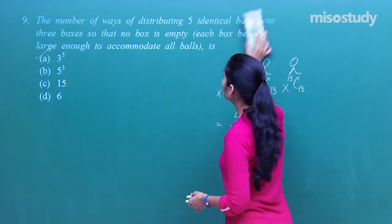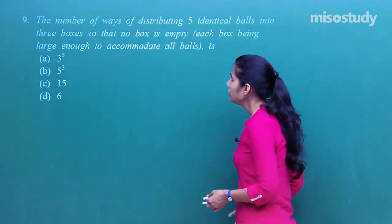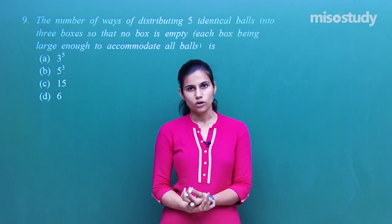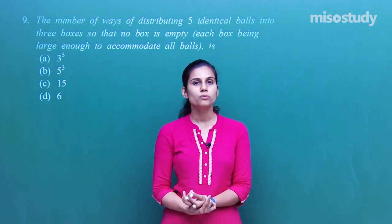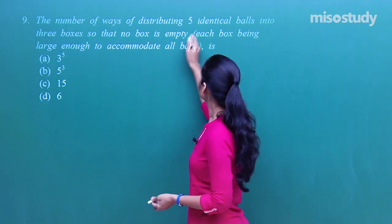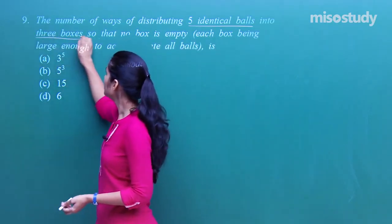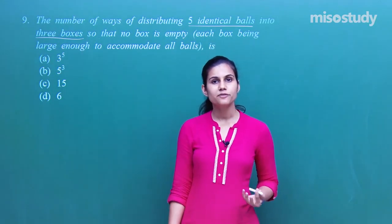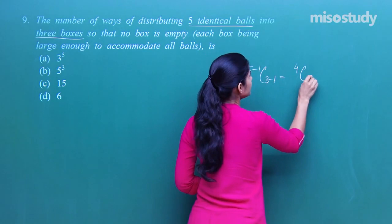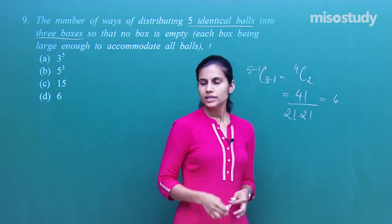The next question: the number of ways of distributing 5 identical balls in 3 boxes so that no box is empty. Using the formula for distributing n identical objects into r groups with each group non-empty: n-1Cr-1. Here that is 5-1C3-1 = 4C2 = 4!/(2!×2!) = 6. So there are 6 ways.